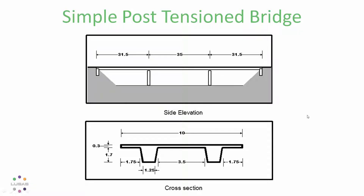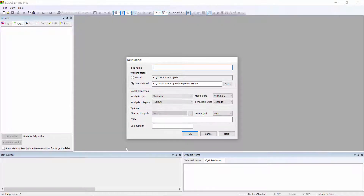In this presentation we're going to look at a simple three-span bridge. We've got spans of 31.5, 35, and 31.5 meters. The deck is 10 meters wide, we've got two deep ribs, and the deck slab is 0.3 meters thick.